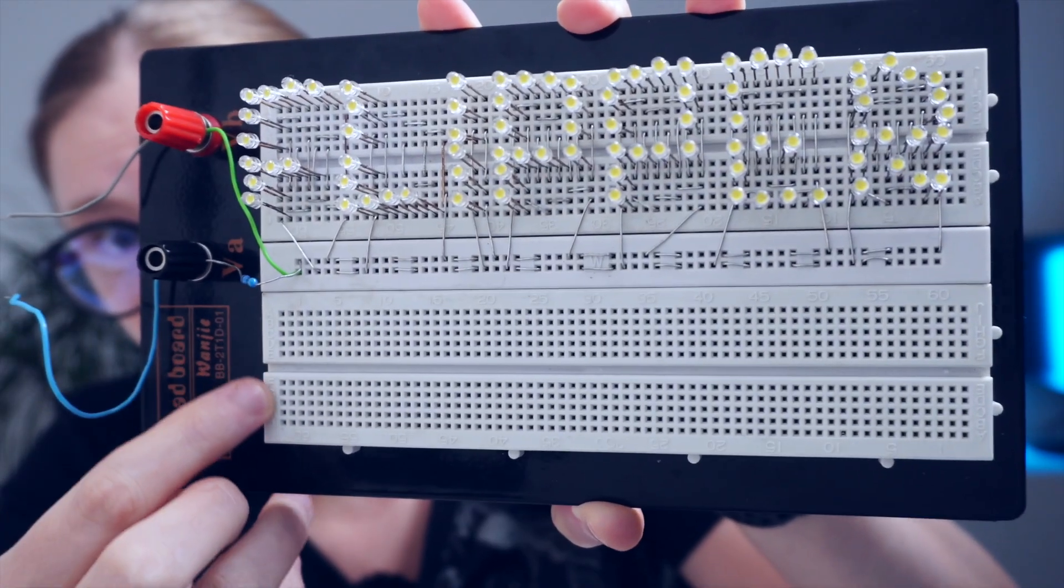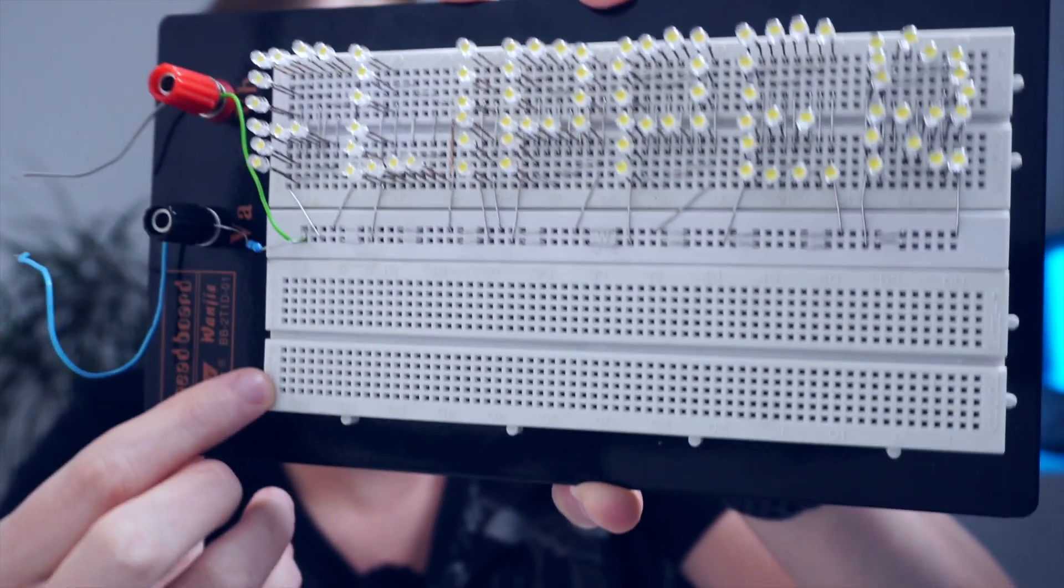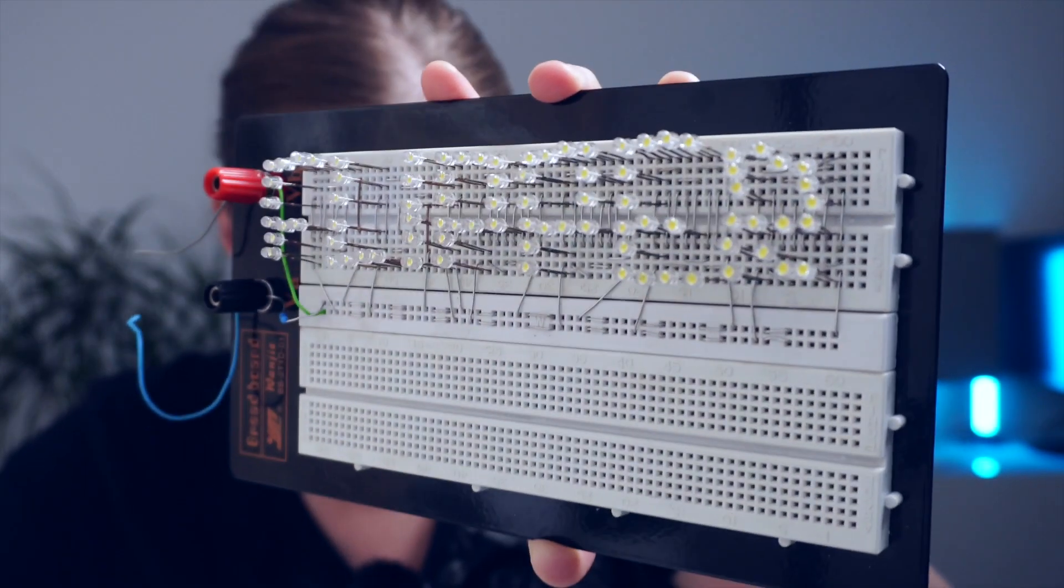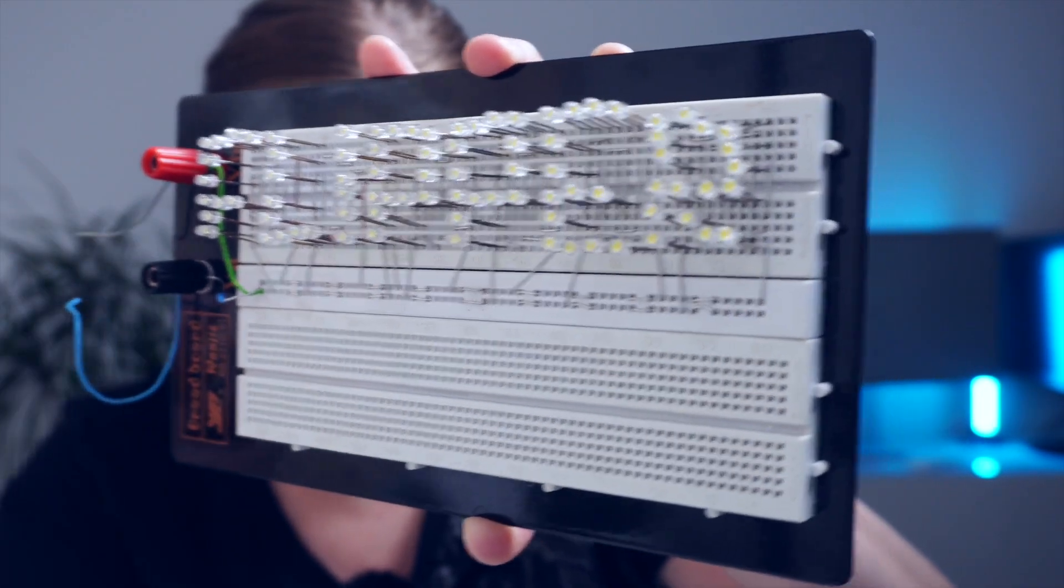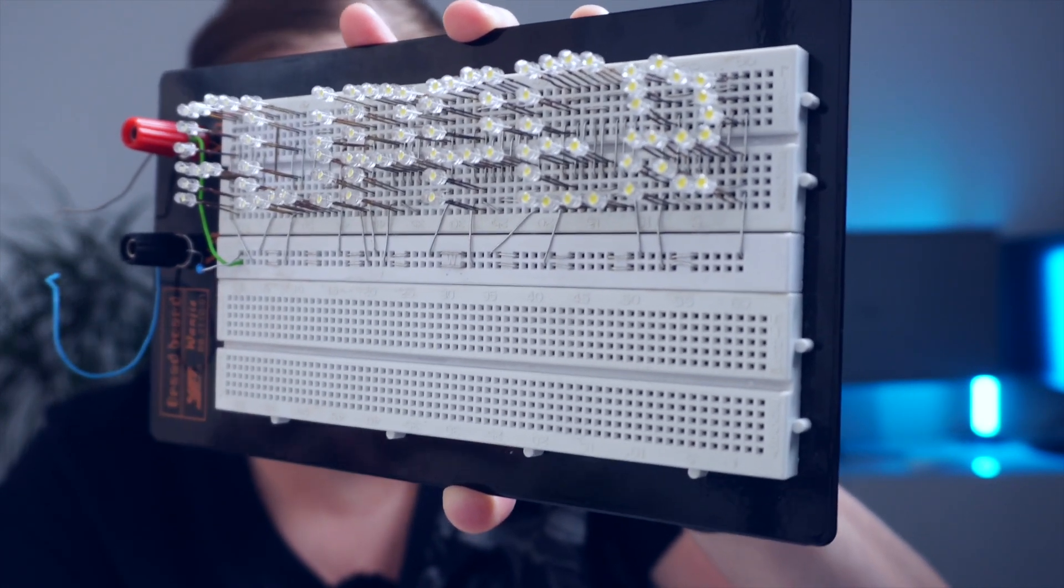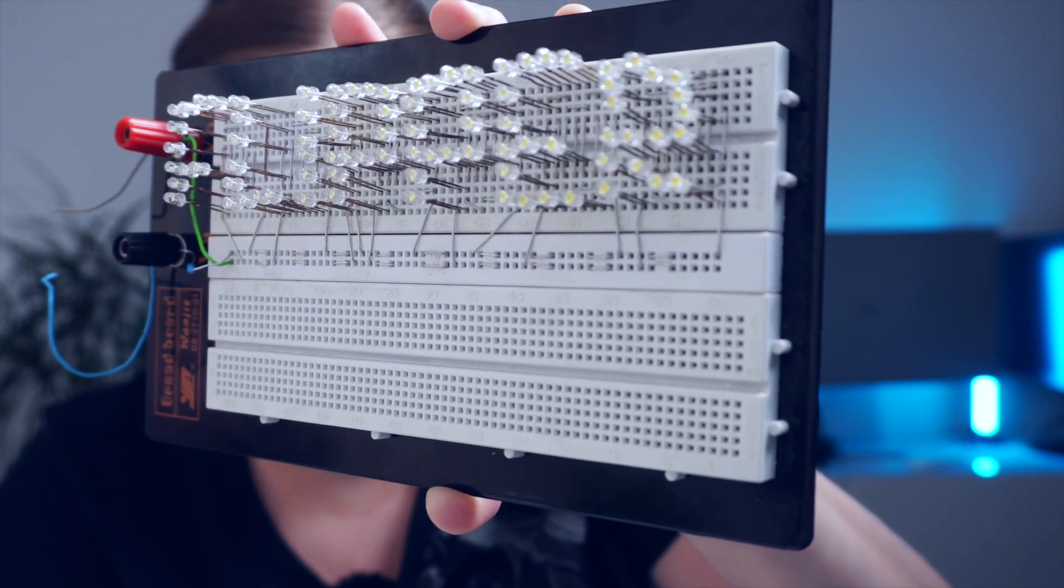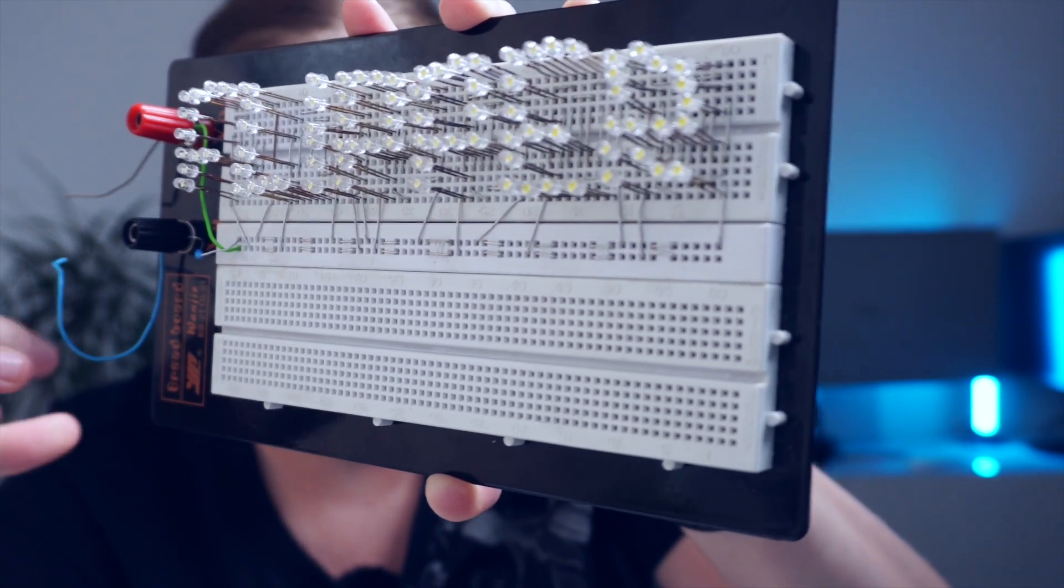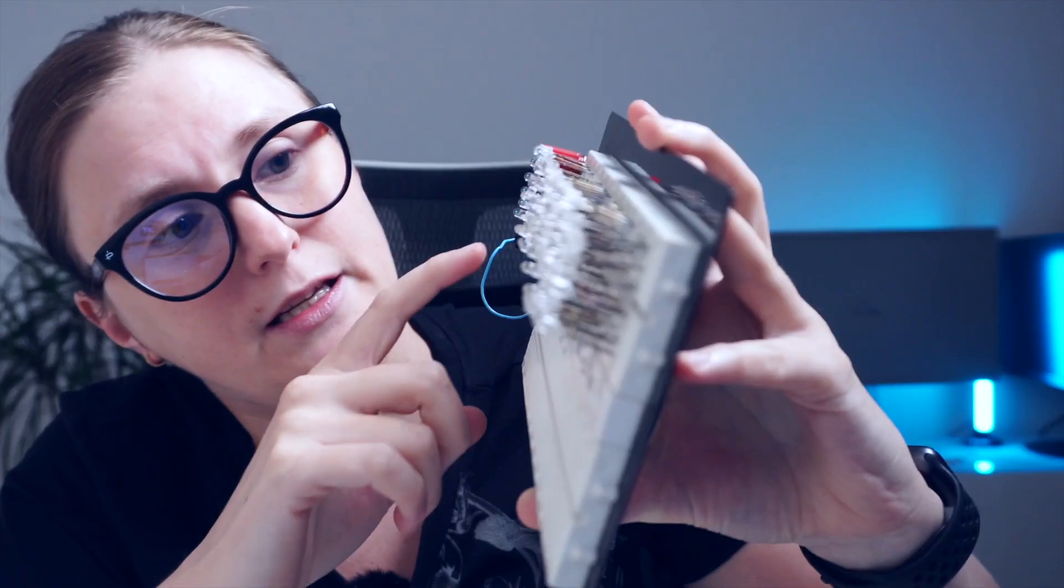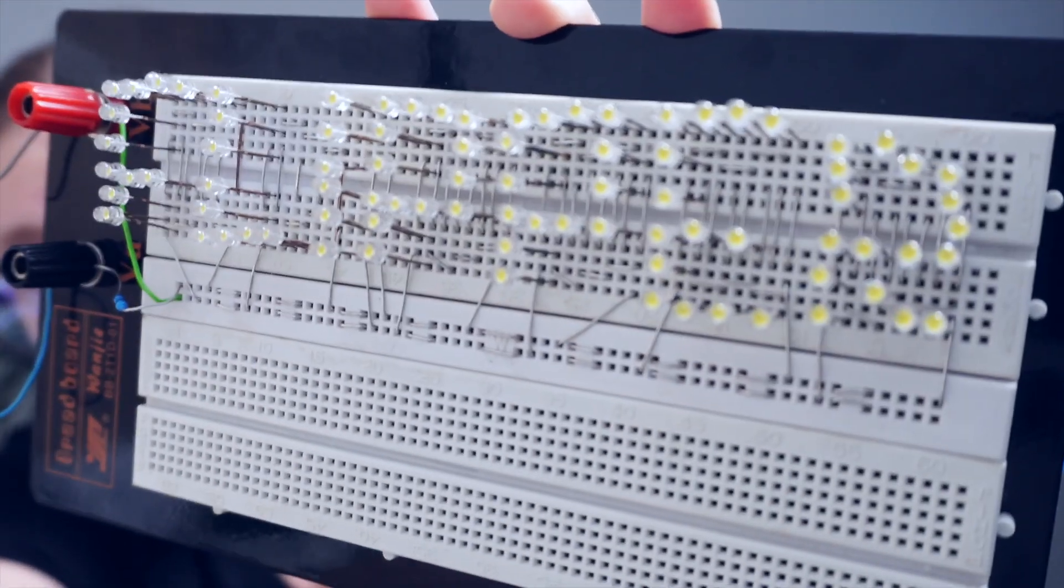As you can see, each column over here, or the contacts in the columns, are actually connected, but contacts within the row are not connected. So that's why I needed to connect them by myself. And basically on this breadboard, each plus on each diode must be connected to the plus contact on another diode. And same actually needs to happen for minus contacts. The connections are made, which you can see well.